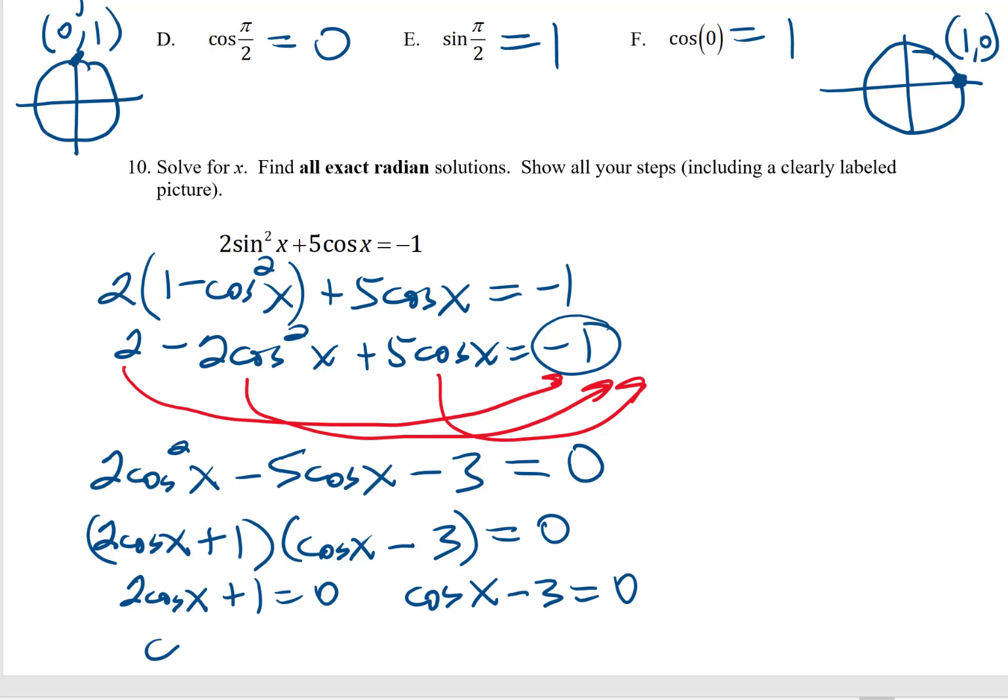Set each factor here equal to 0. So there's my two equations. Let's do the simple math. On this one, you're going to subtract the 1 and divide by 2. On this one, you're going to move the 3 to the other side. Thankfully, I get to cross this one out. You can't have a cosine ratio of 3, so don't worry about that. The only one I have to worry about is cosine x equals negative 1 half.